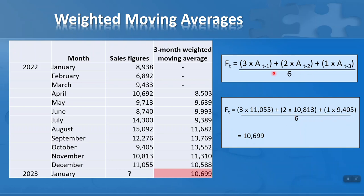The weightings can vary — you can use any weightings appropriate to your needs. Always remember: it's a common mistake that if you change the weightings, you need to add them together to recalculate the divisor. This is a three-month moving average, but if you wanted a four or five month moving average, you would follow the same procedure.